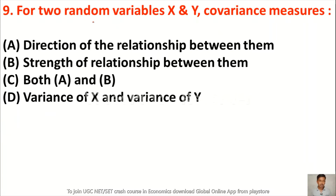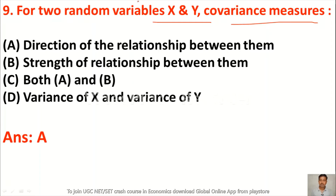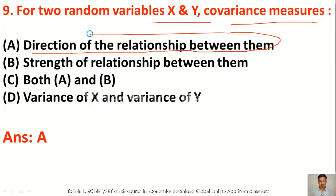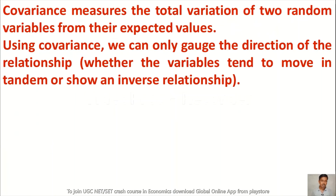Question 9: For two random variables x and y, covariance measures — option A direction of the relationship between them, option B strength of relationship between them, option C both A and B, option D variance of x and variance of y. The answer is option A — covariance measures the direction of the relationship. Covariance measures the total variation of two random variables from their expected values, and tells us whether the variables are moving in a positive or inverse relation.